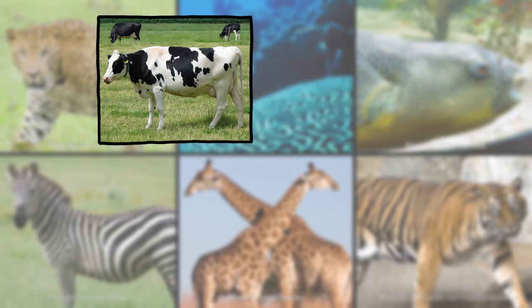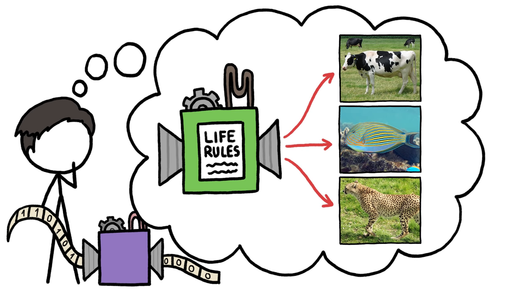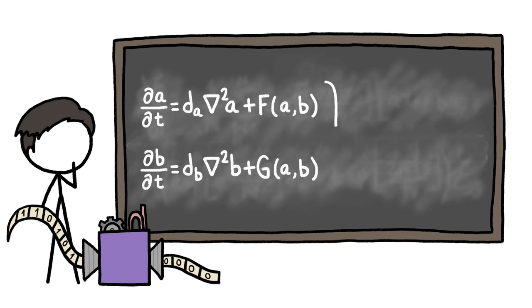Nature exhibits a seemingly endless array of patterns, from the cow's spots to the surgeon fish's stripes to the cheetah's spots and stripes. But Alan Turing, the guy who invented computers, thought that those patterns might not actually be all that different. To show what he meant, he came up with a simple set of mathematical rules that could give rise to all manner of patterns.